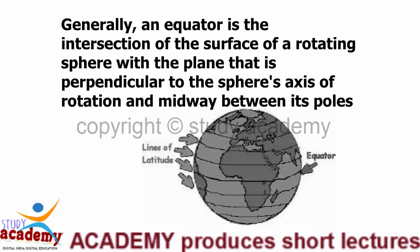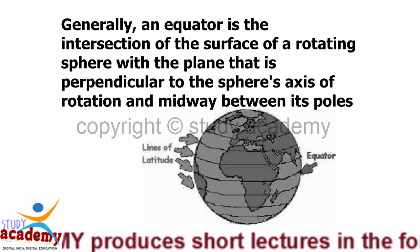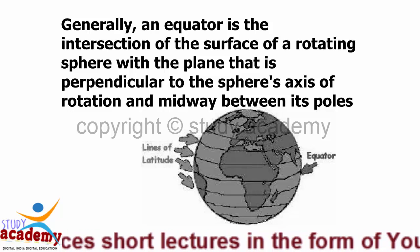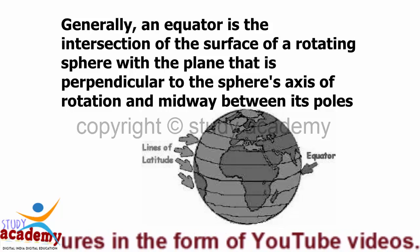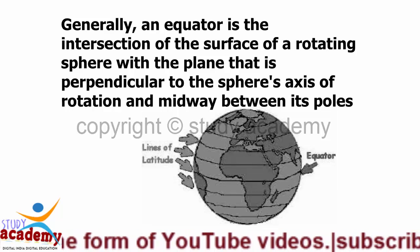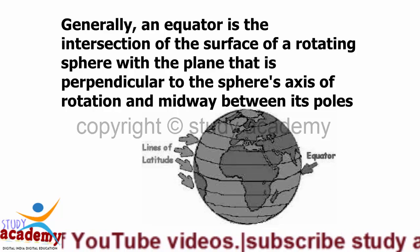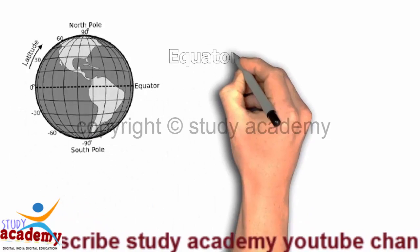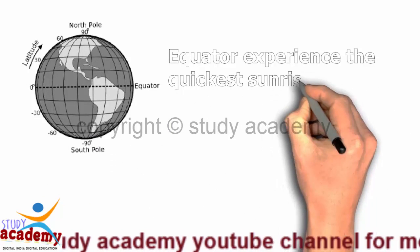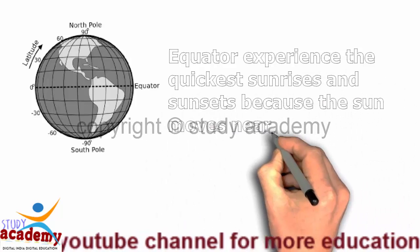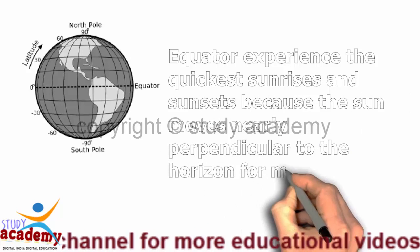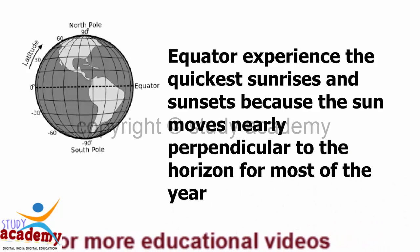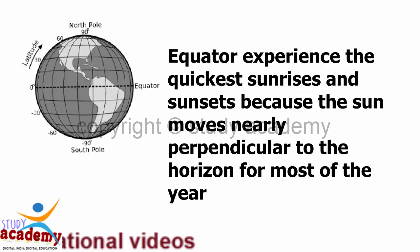Generally, an equator is the intersection of the surface of a rotating sphere with the plane that is perpendicular to the sphere's axis of rotation, and midway between its poles. Equator regions experience the quickest sunrises and sunsets because the sun moves nearly perpendicular to the horizon for most of the year.